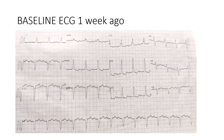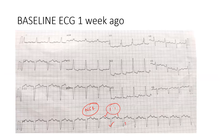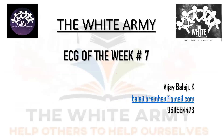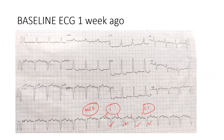Just one week back, the ECG showed similar findings, but it was a normal sinus rhythm — there was 1:1 AV conduction. But in this patient, in just one week, it has become 2:1. The importance is this: one week back, that ECG was already a predictor of impending complete block. Whenever we see this kind of pattern, the patient will deteriorate very soon.